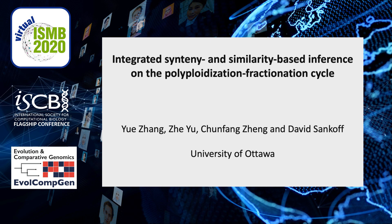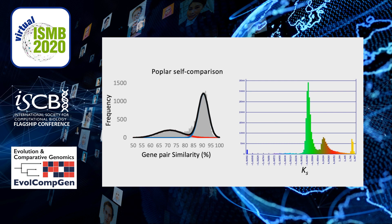Hi, this is David Sankoff, and I'd like to talk about combining synteny and similarity-based inference on the polyploidization fractionation cycle. In plant comparative genomics, a common type of data is a gene-pair similarity distribution. The peaks in this distribution represent ancient polyploidization events. Here we have one triplication event, also called hexaploidization, followed by a duplication event called tetraploidization.